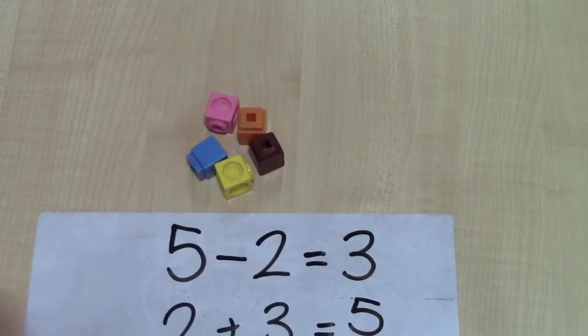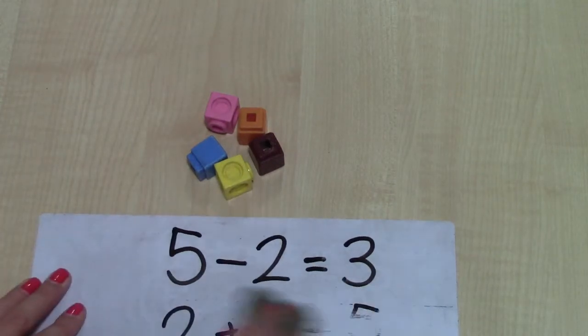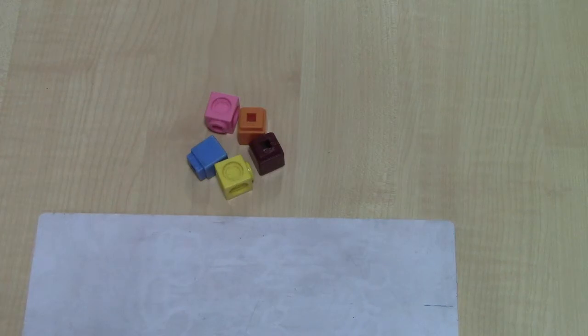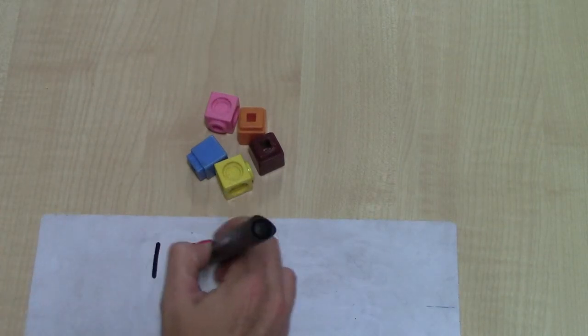Moving away from using the cubes, as the numbers get slightly bigger, they become a bit more problematic. So if I've got something like seventeen take away twelve, I'll just write that down here.